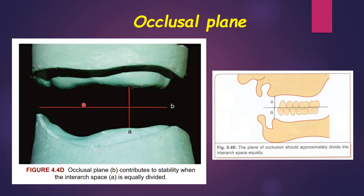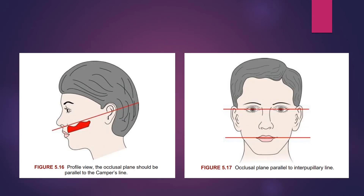In picture A, the occlusal plane contributes to stability when the interridge space is equally divided. The plane of occlusion should approximately divide the interridge space equally. Coming to the profile view, the occlusal plane should be parallel to the Camper's plane.